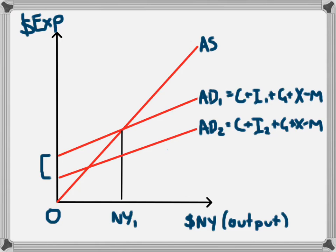The original investment level I₁ led to national income NY₁, but the decrease in investment and aggregate demand leads to a decrease in national income.